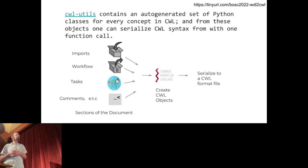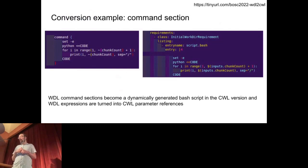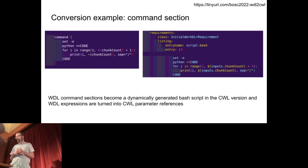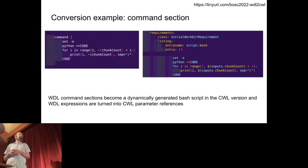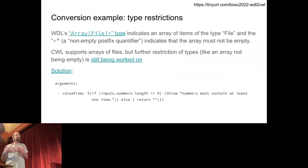How does this actually work? In WDL, the command block is at the center of every command tool definition — it's a bash script. So we explicitly make that a bash script in the CWL version, and we represent the WDL expressions as CWL expressions. We generate this bash script at runtime and execute it in the CWL version.